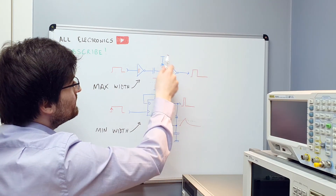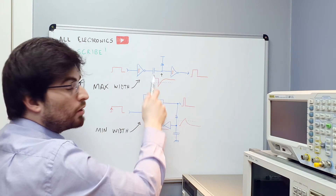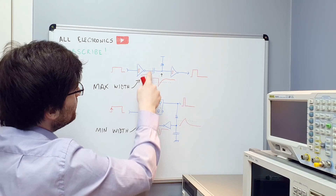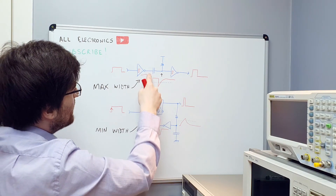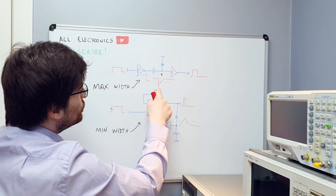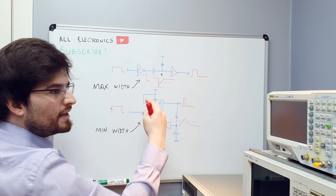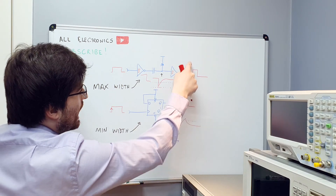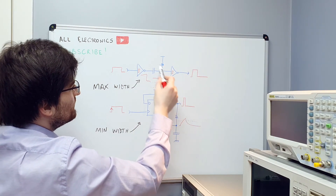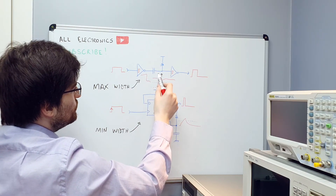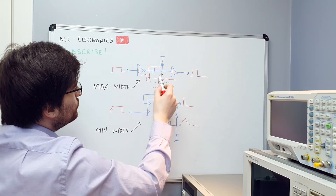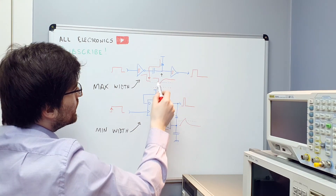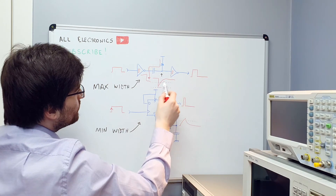The output pulse is generated by this differentiator RC circuit network. When the input pulse goes high, the output of this inverter will go low. When this node goes low — so it's grounded — we connect the capacitor to ground. In this manner, this node will go instantaneously to ground level, because for the edge of the signal, this capacitor is a short. So this node goes low and the output goes high, because here we have a Schmitt trigger inverter. As DC current cannot pass through the capacitor, it will be slowly charged by this resistor, and this node will grow to a higher level slowly. When the voltage of this node goes above the threshold of this Schmitt trigger, the output goes low again.